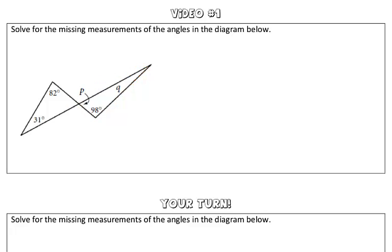We're going to go ahead and start with the triangle that has more information, which would be the triangle on the left. Taking a look, we know two angle measures: 82 degrees and 31 degrees.